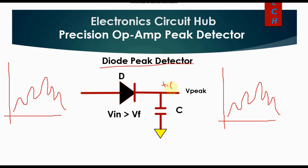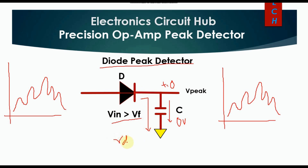At time t equals zero, there is no charge stored at the capacitor and the voltage across the capacitor is zero volts. Whenever you apply an input signal and whenever VIN is greater than VF, this diode will conduct and it behaves like a short circuit. Now the capacitor will be charged using some time constant RD times C, and the voltage across this capacitor would be the first peak.